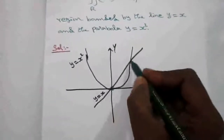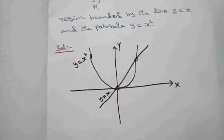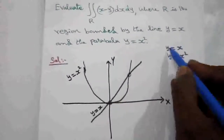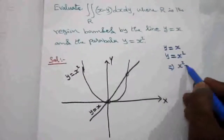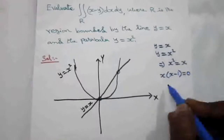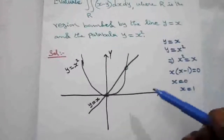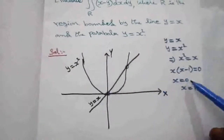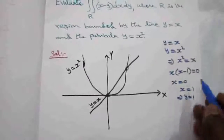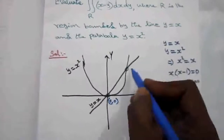The points of intersection are here and here. To find the points of intersection, we solve the two equations: y equal to x and y equal to x square. Equating both, x square equal to x, so x(x minus 1) equal to 0, giving x equal to 0 and x equal to 1. When x equal to 1, y equal to 1; when x equal to 0, y equal to 0. So the points of intersection are (0,0) and (1,1).